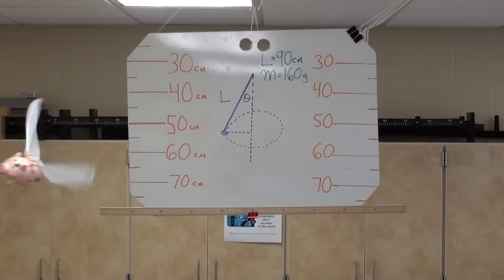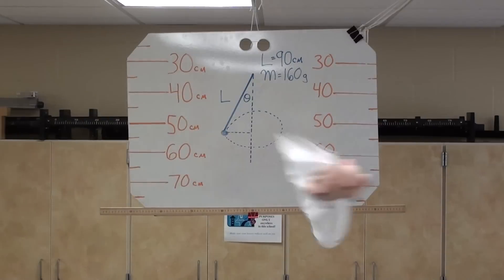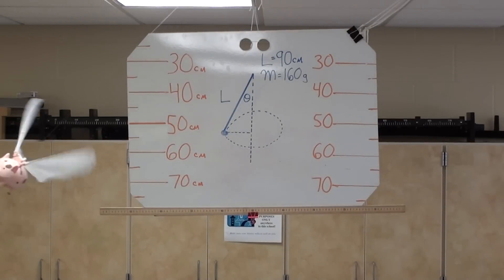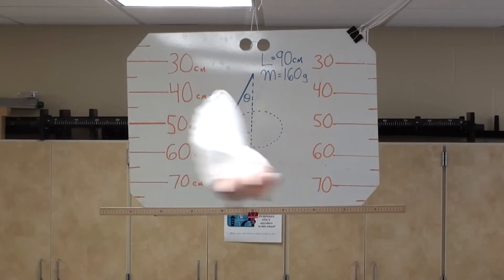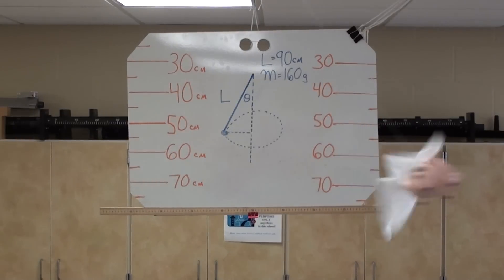So what I've set up is a pseudo experiment where you can measure the angle theta. Think about how you could figure that out from the length of the pendulum, which is 90 centimeters, and the height that the pig is below the ceiling. You can read that off of the dry erase board. From that you can measure the angle.